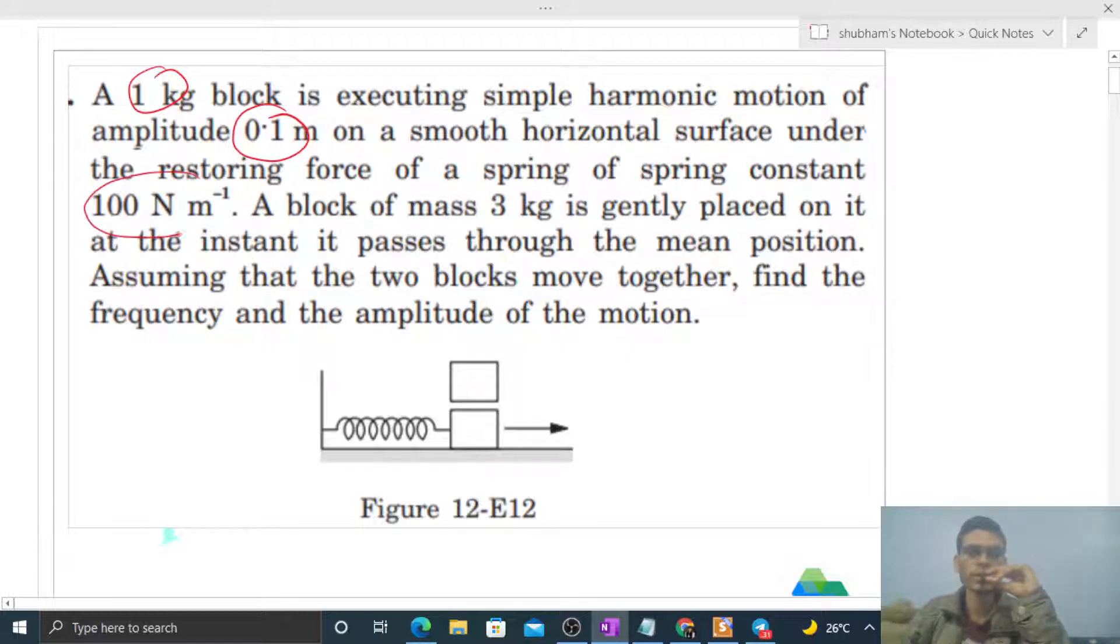A block of mass 3 kilogram is gently placed on it at the instant it passes through the mean position. Assuming that the two blocks move together, find the frequency and amplitude of the motion.